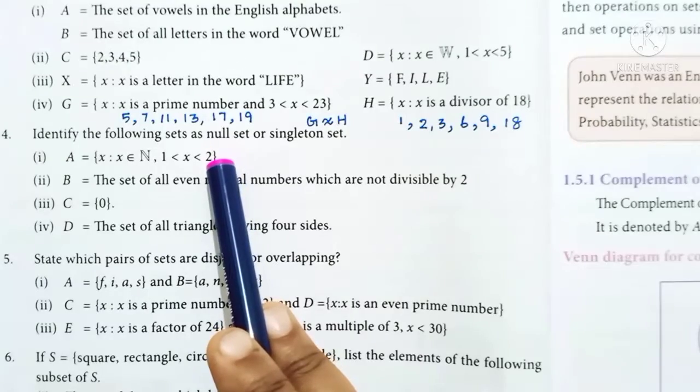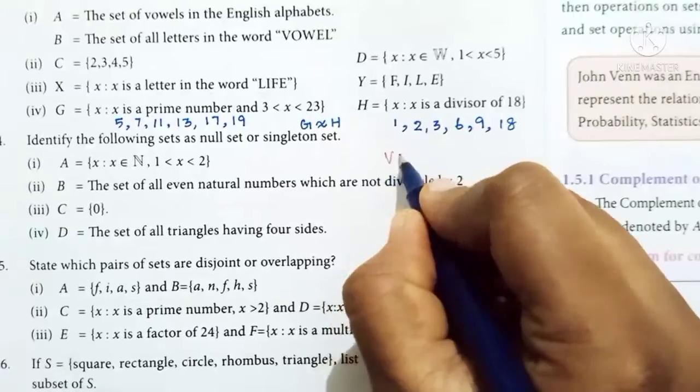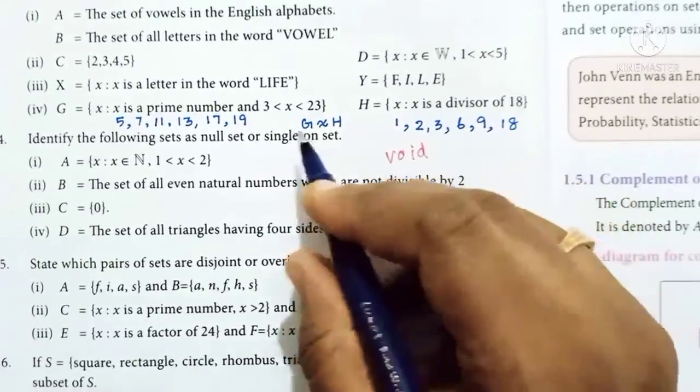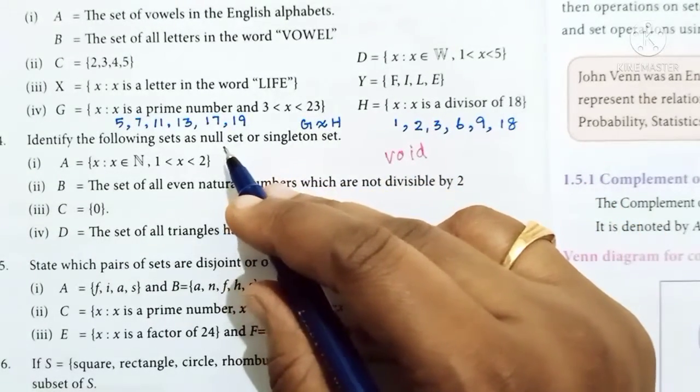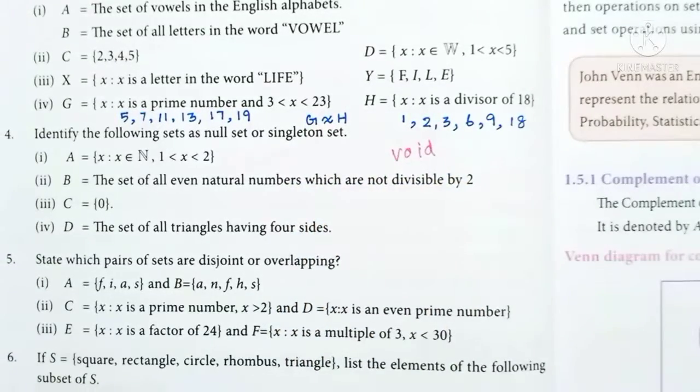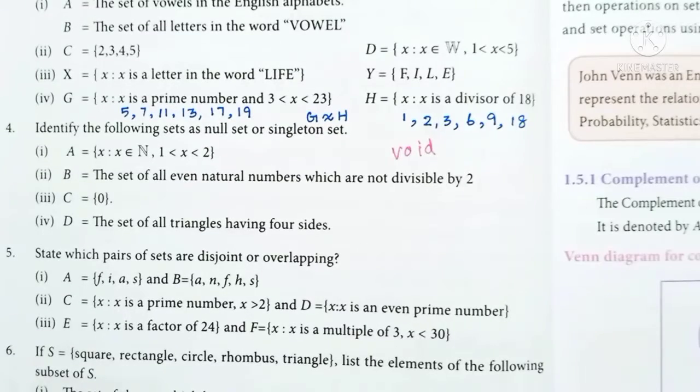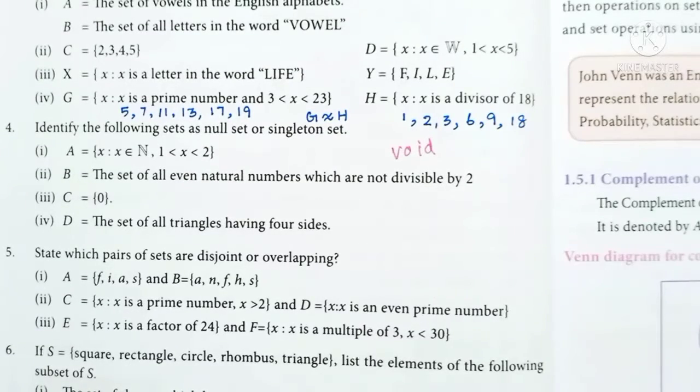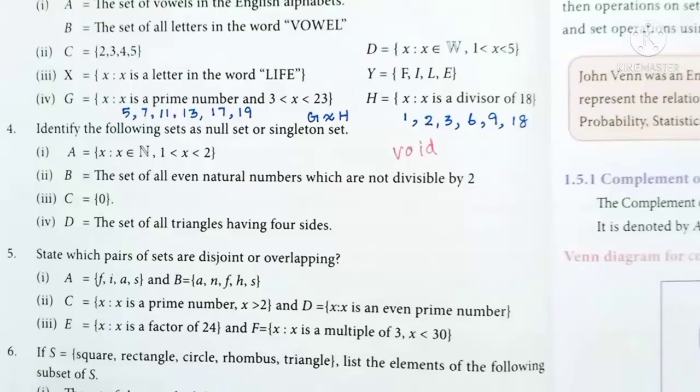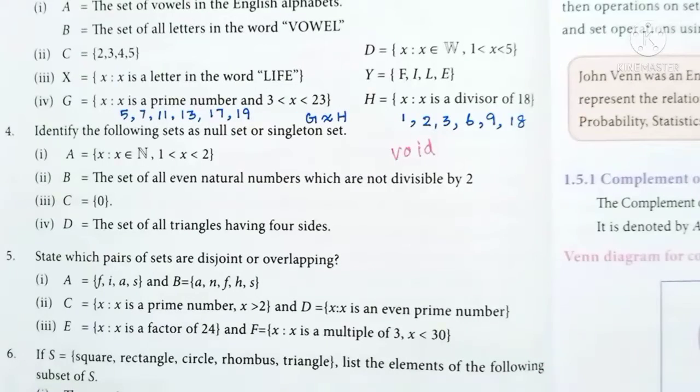Null Set, Void Set, or Empty Set means no elements. For example, set of girls students in a boys school has no elements. Singleton Set: A set contains only one element.